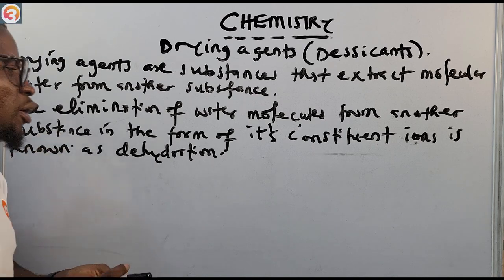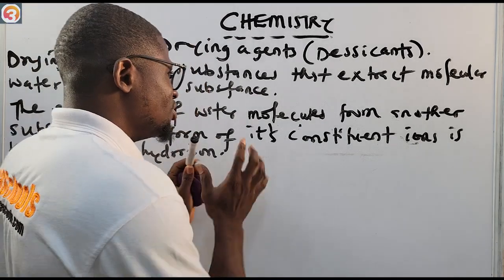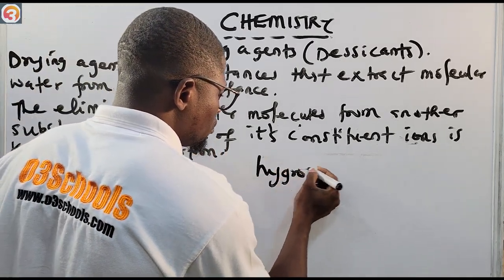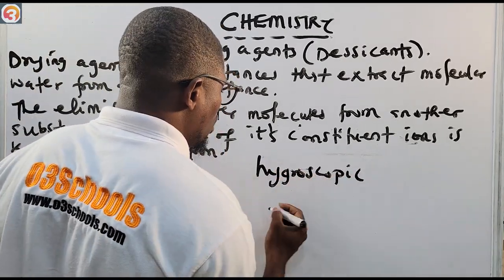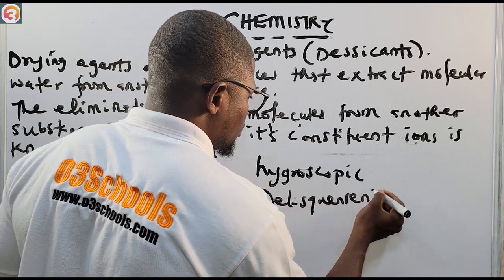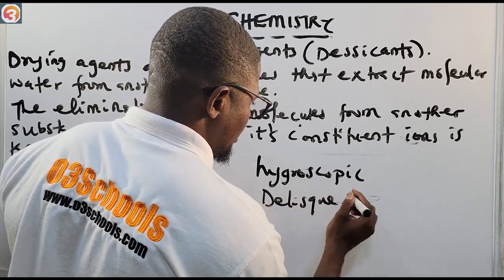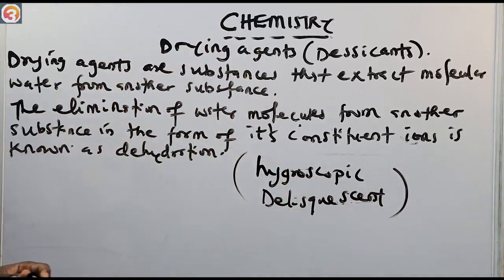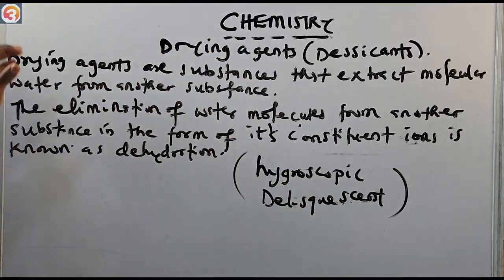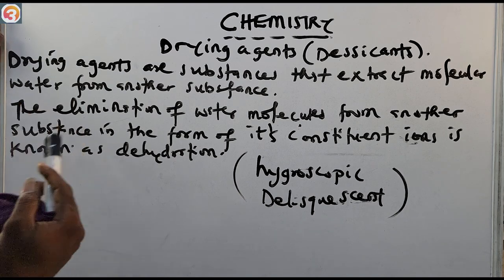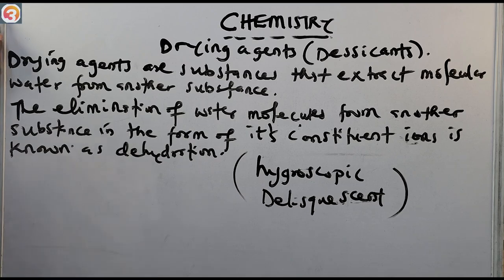Drying agents are mainly hygroscopic or deliquescent substances. They are mostly hygroscopic or deliquescent substances. Now let us look at some common drying agents and the gases that they dry.